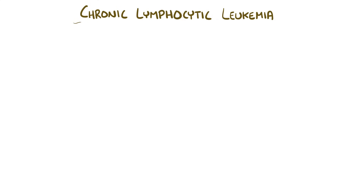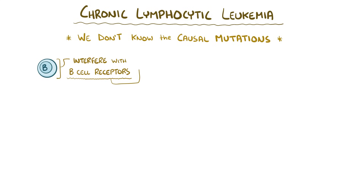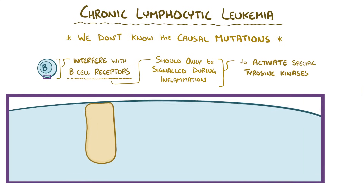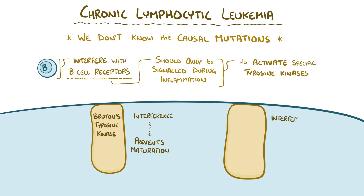In chronic lymphocytic leukemia, the most likely cause is also a mutation in the cell's chromosomes, we just don't know which particular mutation or mutations. Whatever the case, the result is that B cells start to interfere with the pathways of B cell receptors, which should only be signaled during infection to activate a few specific tyrosine kinases. Interference with Bruton's tyrosine kinase, for example, is probably what stops CLL cells from maturing fully, and it's similar interference with other tyrosine kinases that allows them to die slower than they divide, which is why they build up.